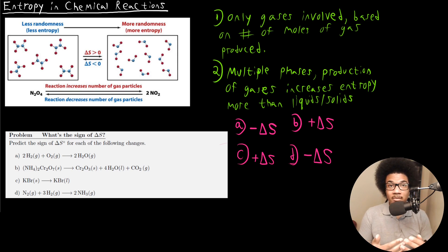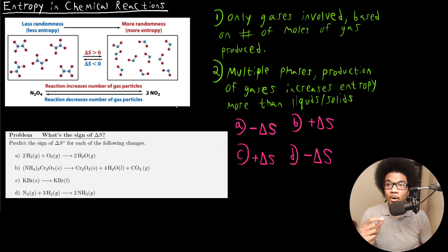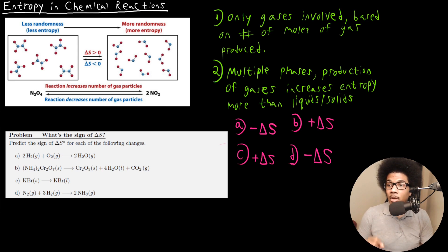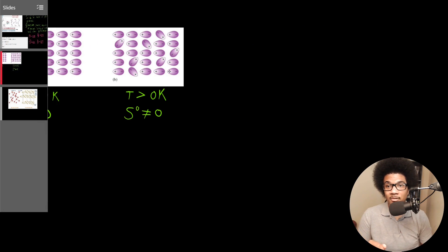So based on these basic rules, you should be able to evaluate a chemical reaction and tell whether the entropy is going to increase or decrease without necessarily having to calculate anything. However, we can calculate the standard entropy for a chemical reaction.